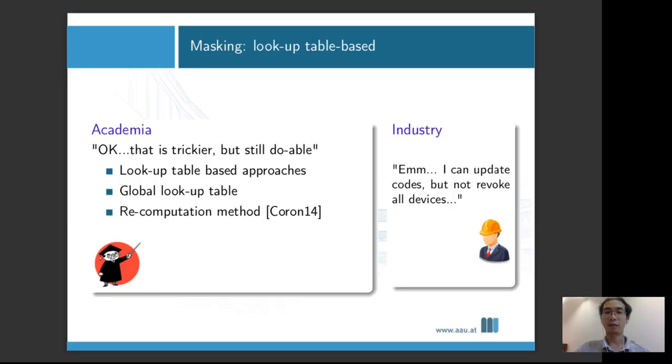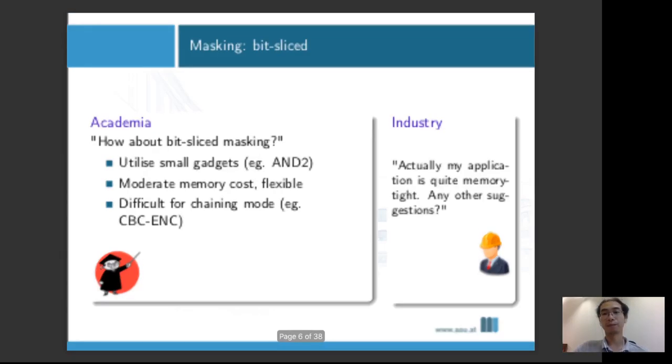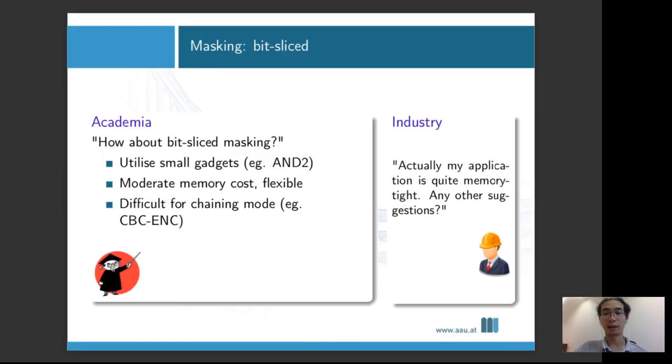The researcher might say, that's trickier because that forces us to use software masking, but still doable. If you have a lot of memory resources, perhaps you can use the lookup table-based approaches. For example, you can store all the shared operation into one huge table. The overall masking scheme might be quite efficient, but at the cost of using a lot of RAM space. On the other hand, you can trade some memory space with execution time by recomputing some of the shared table online, having a smaller memory footprint but with the cost of longer execution time.